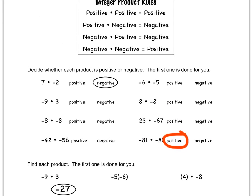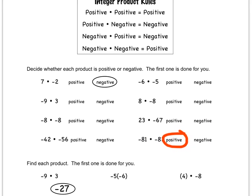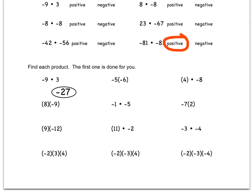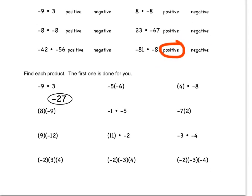So if we go back up here, negative times a positive would be negative times a positive is negative. So we know that our answer is going to be negative 27. As you can see here, we made negative 27 and circled it.